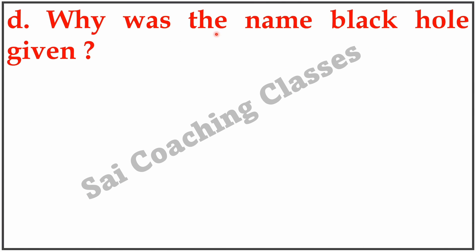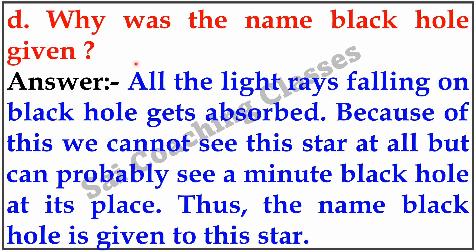D. Why was the name black hole given? Answer: All the light rays falling on the black hole get absorbed. Because of this, we cannot see the star at all but can probably see a minute black hole at its place. Thus, the name black hole is given to this star.